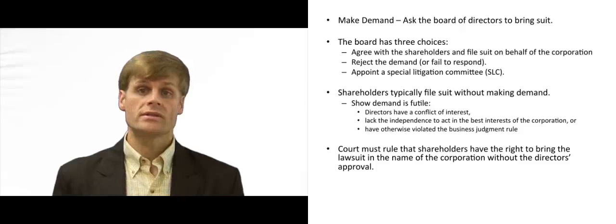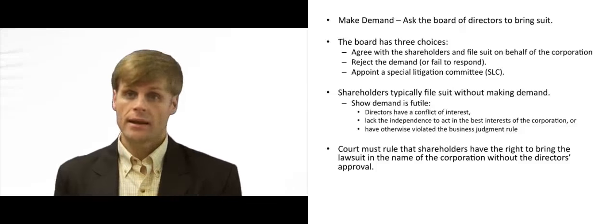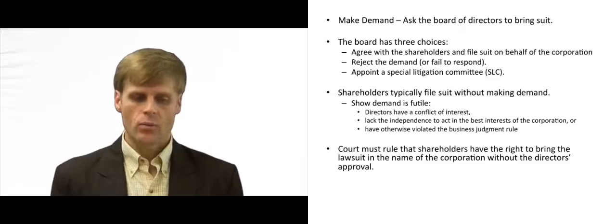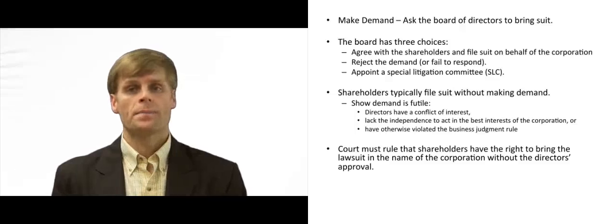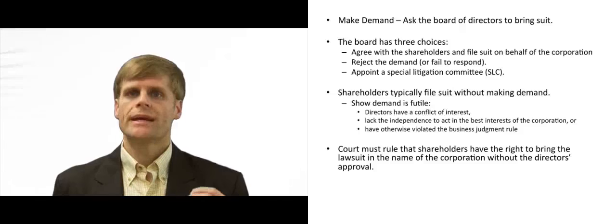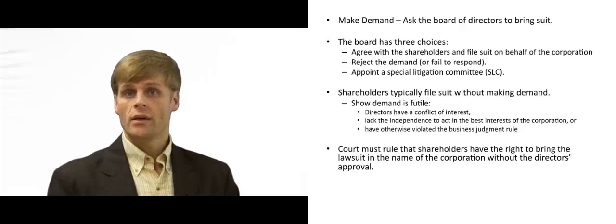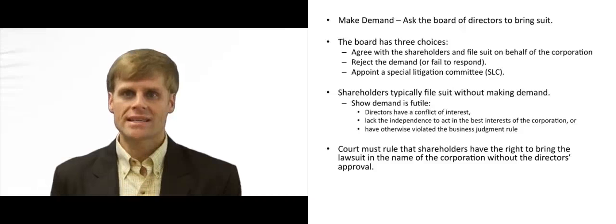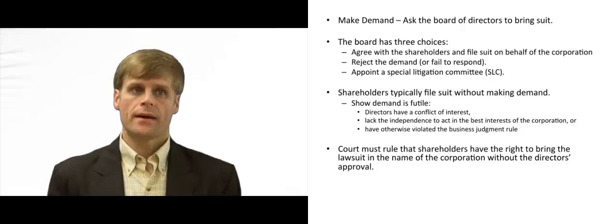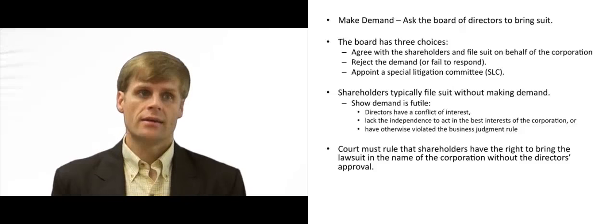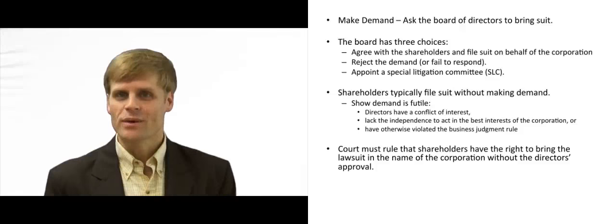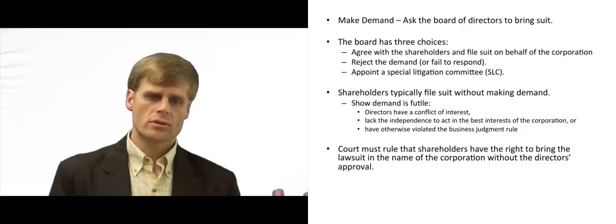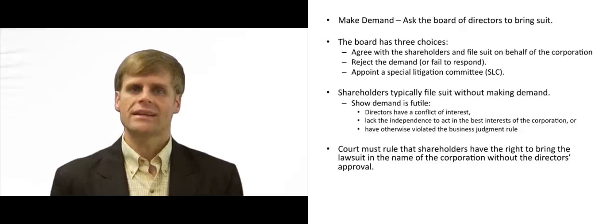Lots of times shareholders will avoid this whole process altogether. They will never make demand on the corporation — they will simply go immediately to the court and seek to initiate the derivative litigation. What they have to show the court is that demand on the board was futile. That normally means there is some inherent conflict of interest between what the shareholders are alleging against the alleged wrongdoer and the board itself. For example, perhaps the chairman of the board has such control over the board that there's no way the board could independently make a decision to sue the chairman. This could be common when the chairman and CEO are the same person — there's too much centralized control so the board cannot be free of conflict.